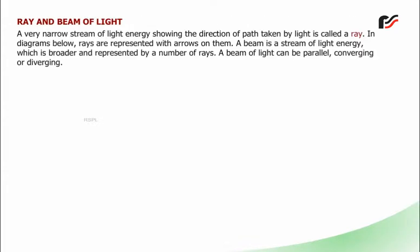Ray and beam of light: A very narrow stream of light energy showing the direction of path taken by light is called a ray. In diagrams, rays are represented with arrows on them.